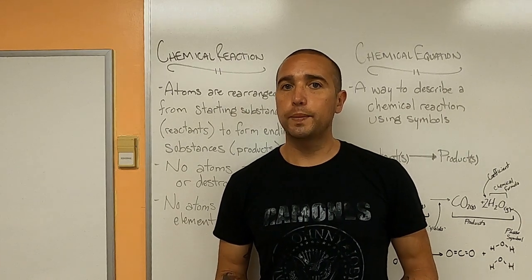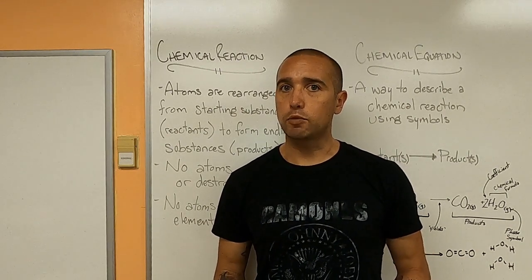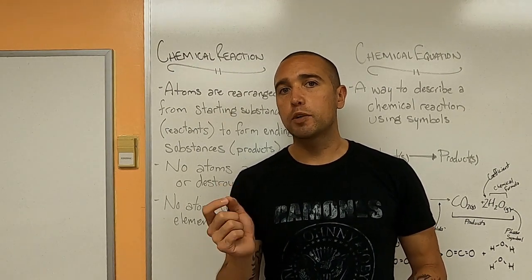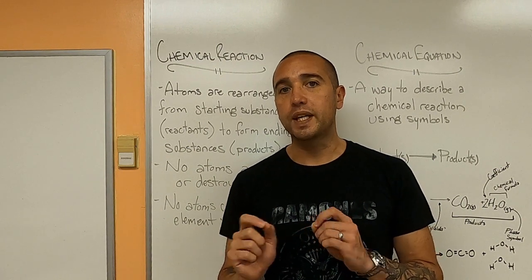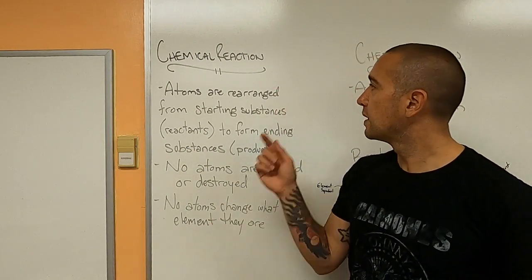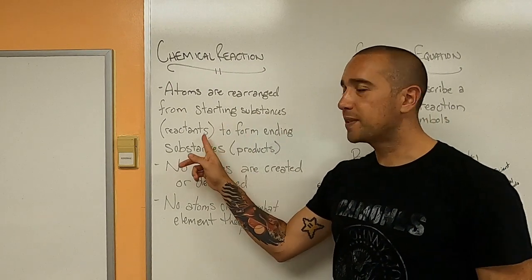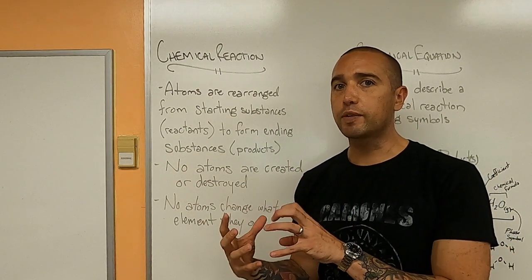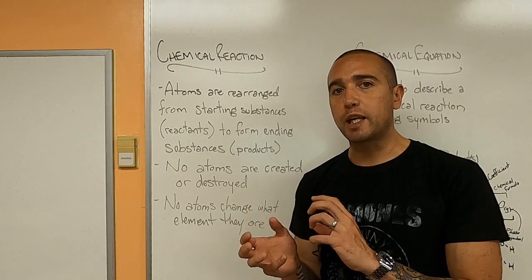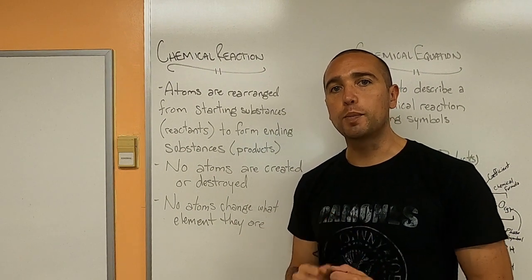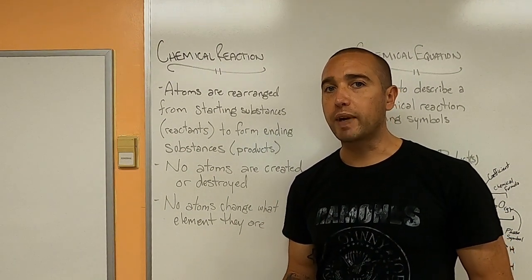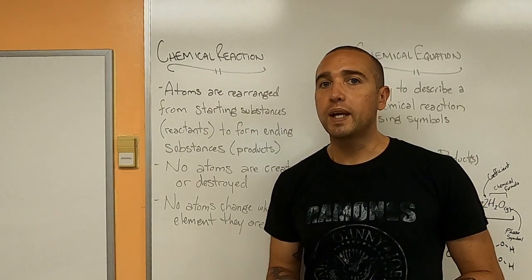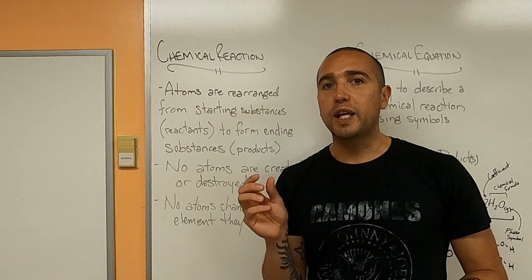When we're talking about a chemical reaction, we're talking about when atoms — the things that all matter is made of — are rearranged into different orientations or paired with other atoms. There are starting substances called reactants. Those are the things at the beginning of the reaction, and they are rearranged. The atoms in them are rearranged to form products. Now the atoms are only rearranged — no new atoms are created, no atoms disappear or are destroyed, and an atom cannot change what element it is.